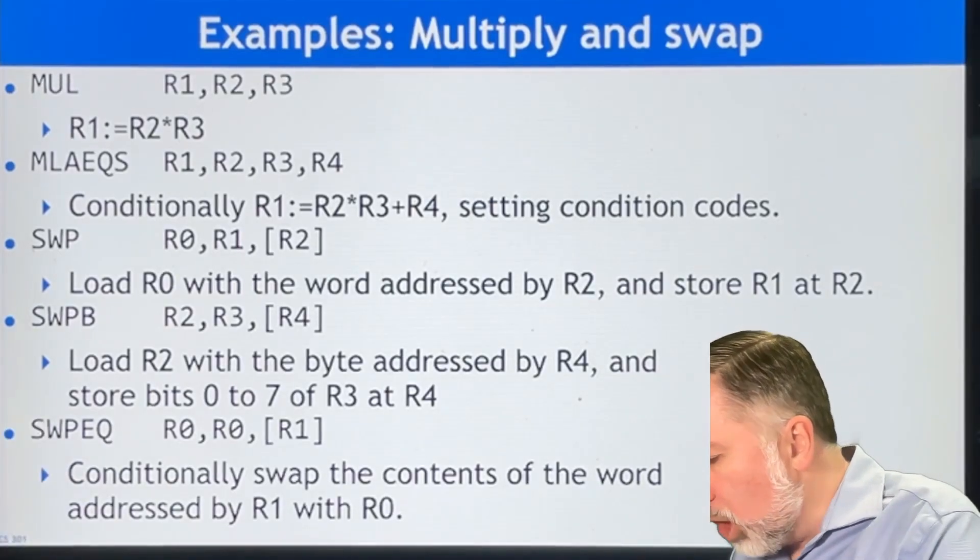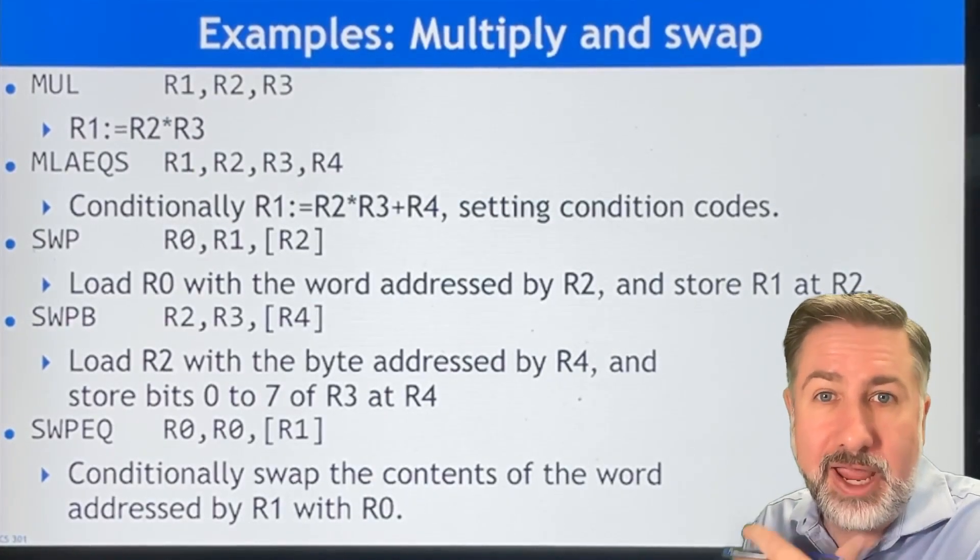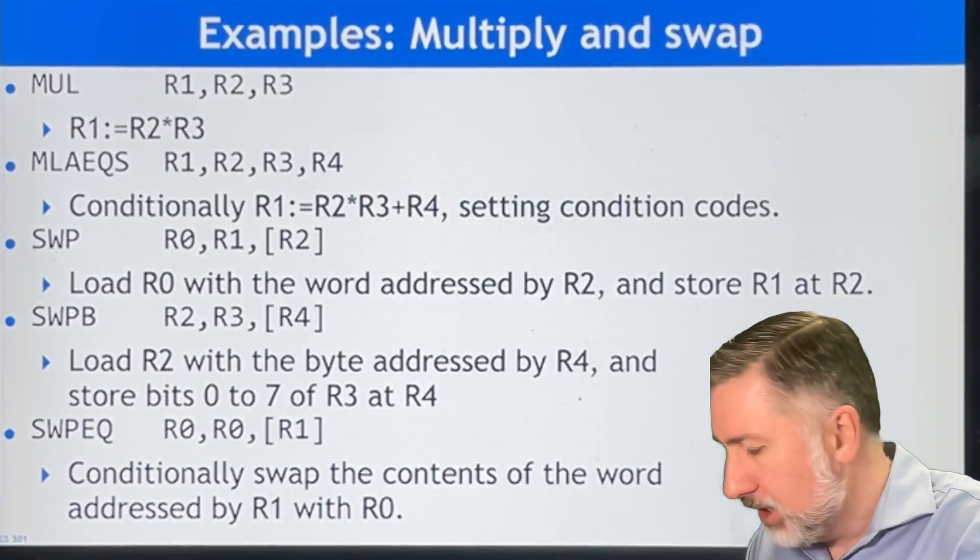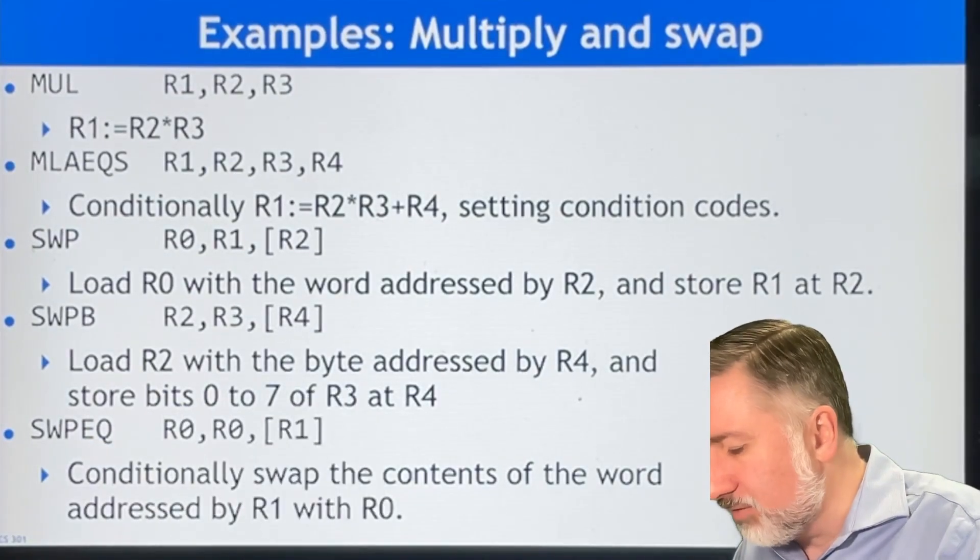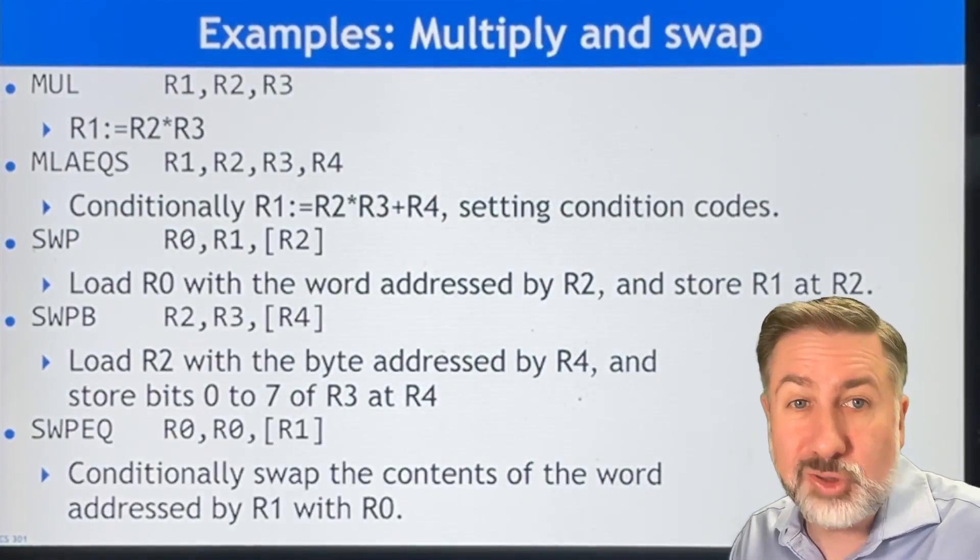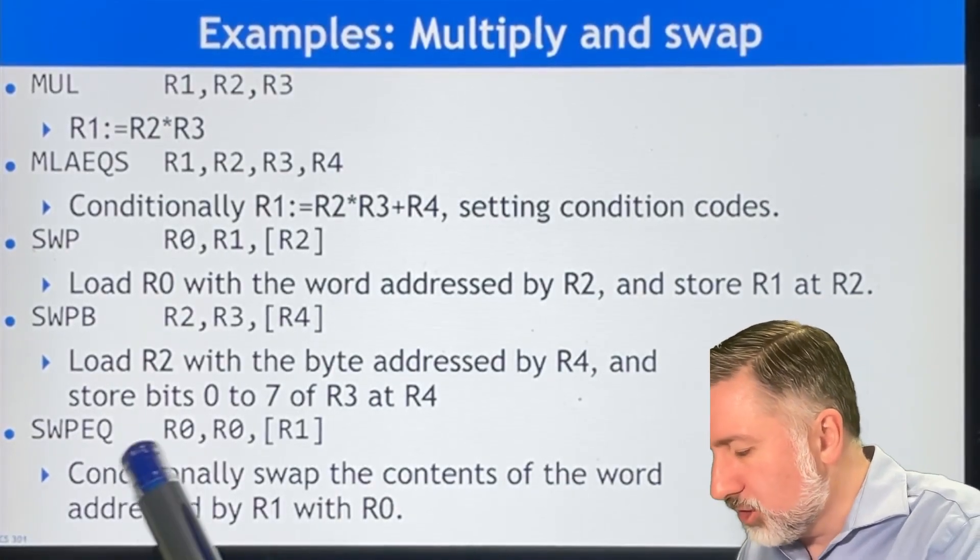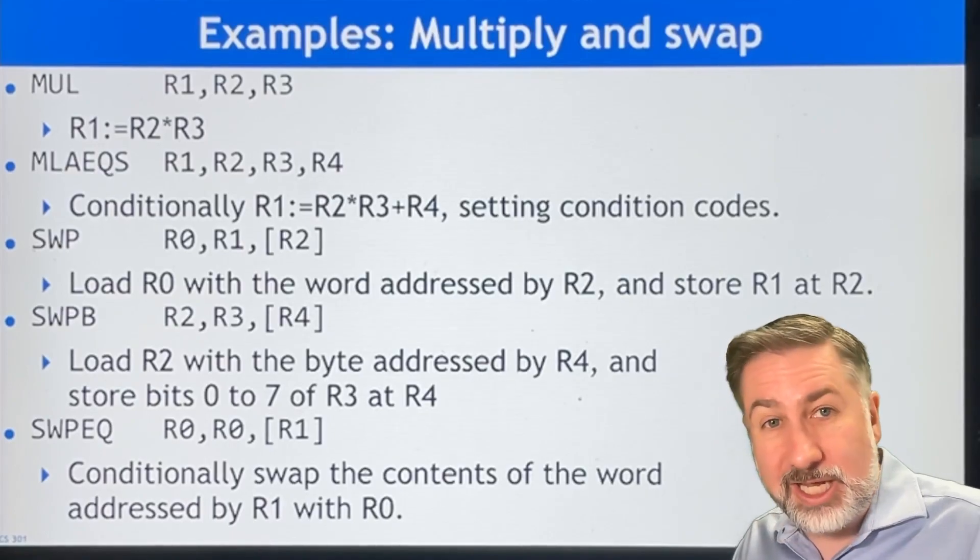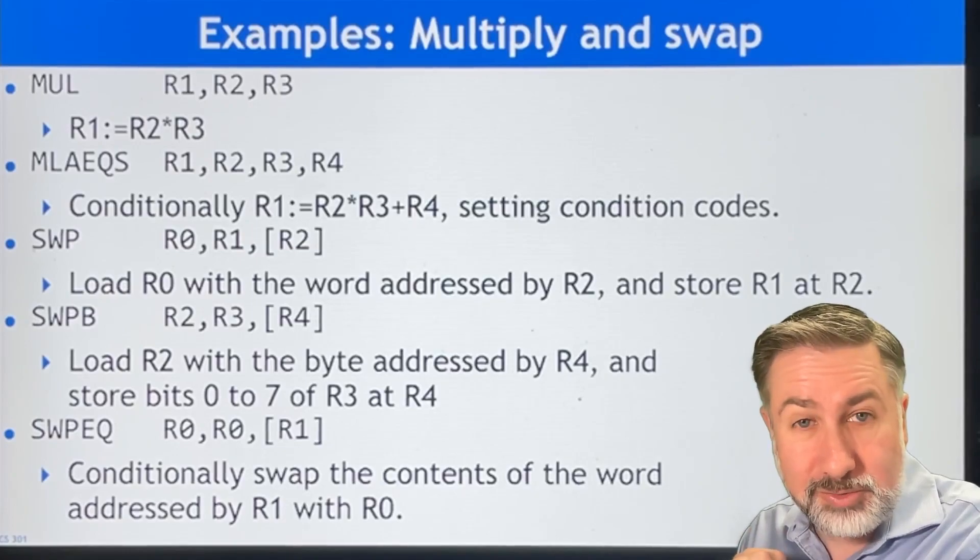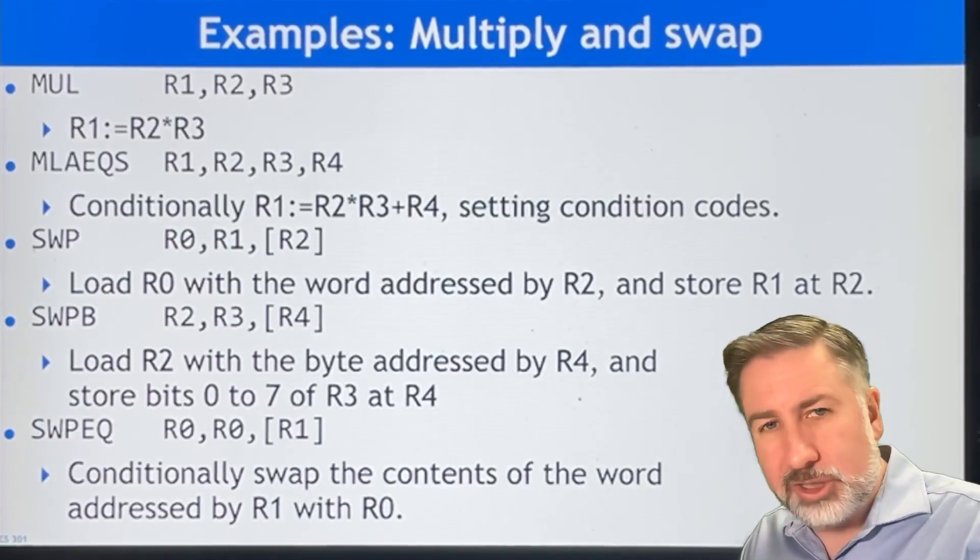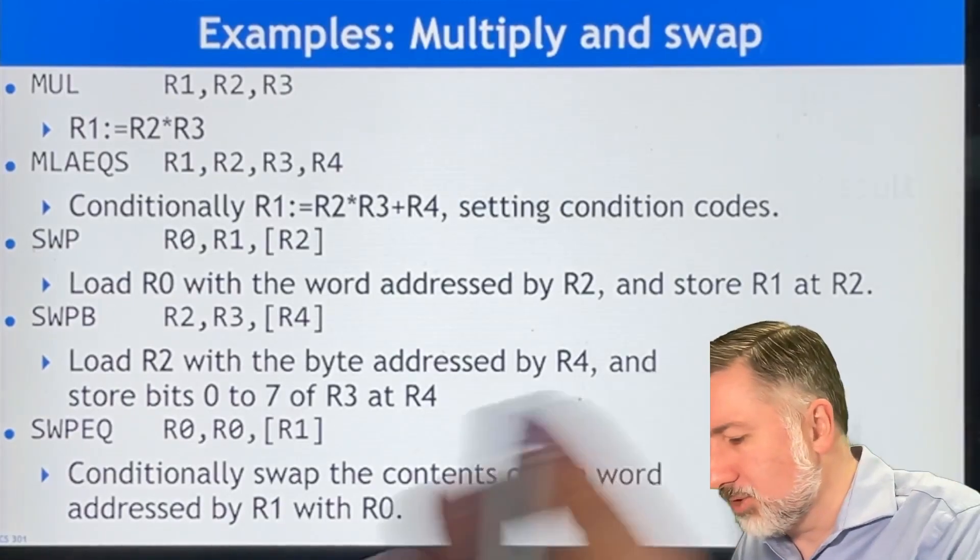And then swap B. This is going to be swapping only a byte of memory instead of a whole word of memory. It's going to load R2 with a byte addressed by R4, and then store bits 0 to 7 of R3 at R4. So it's byte addressable instead of word addressable. And then another example, swap EQ, R0, R0, R1. We're going to say if the previous operation resulted in a 0, or if the comparison said that those two numbers are equal, then we're going to take R1, R0, and flip them. Simple examples of multiply and swap.